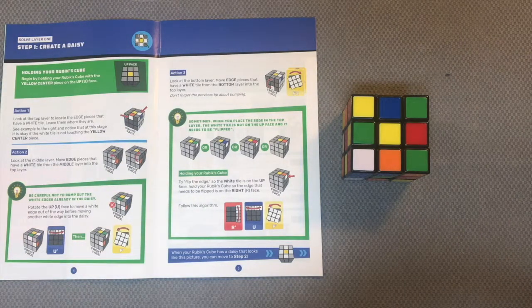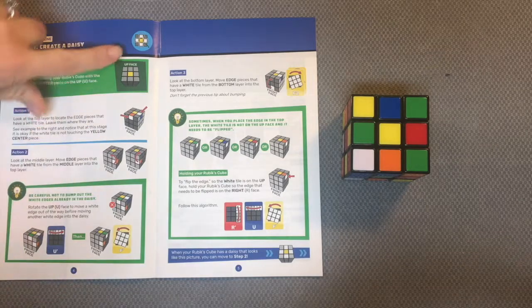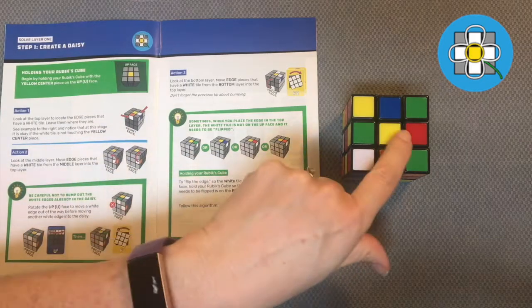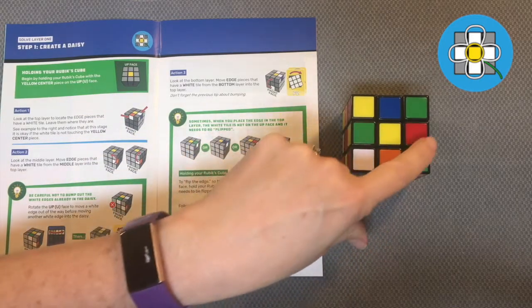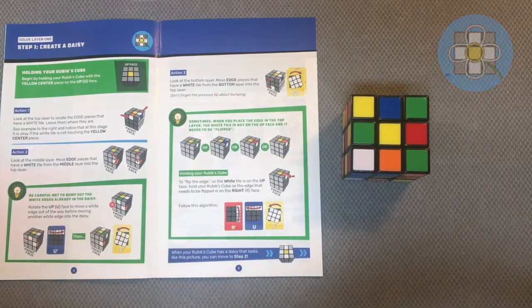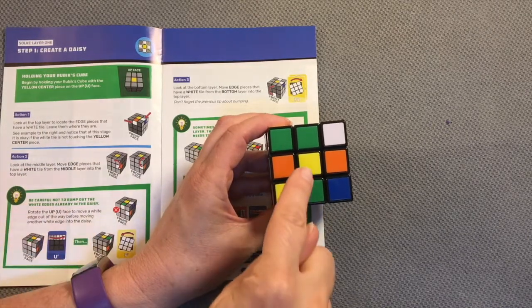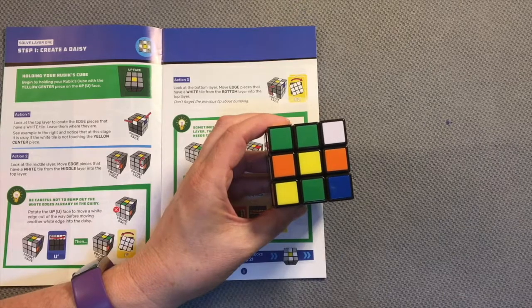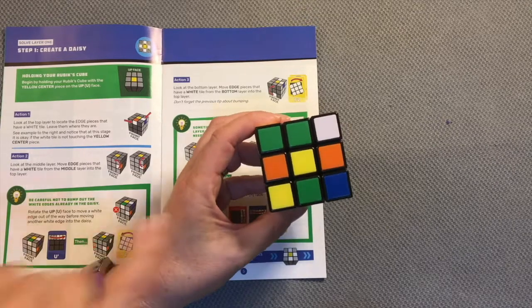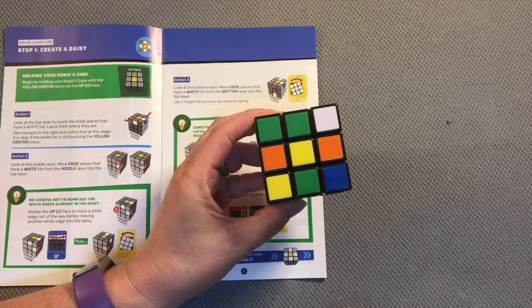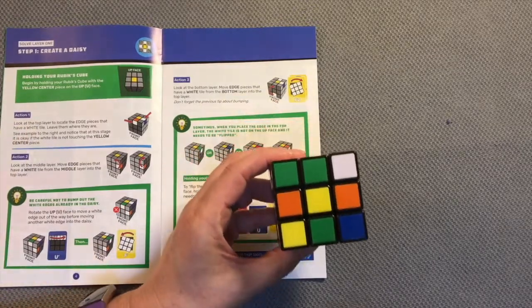Step one for solving the 3x3 Rubik's Cube is to create a daisy. You can see the image here at the top, which has a yellow centerpiece, and I'm looking for white edge pieces. Begin by holding your Rubik's Cube with the yellow center on the up face. Look around to find the face that has your yellow cube in the center. Then you're ready to move to action one.